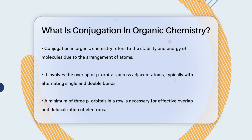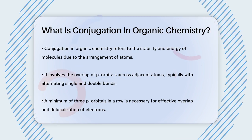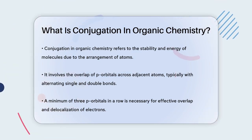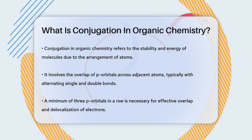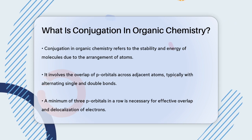For this to happen, there need to be at least three p orbitals in a row that overlap or connect, and there must be delocalized electrons between these overlapping p orbitals.